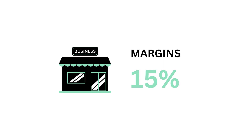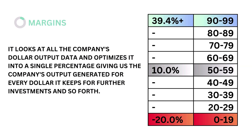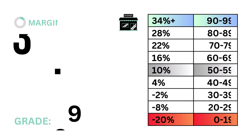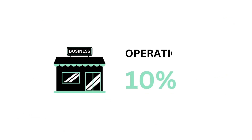Next, margins, which accounts for 15% of the business factor. Margins looks at all the company's dollar output data and optimizes it into a single percentage, giving us the company's output generated for every dollar it keeps for further investments. The models tell us that a margin rate of 10% is considered average. Here's our margin rate and margins grade.